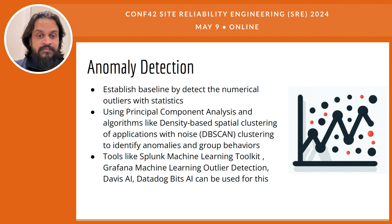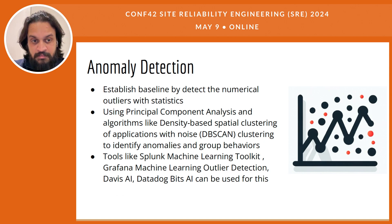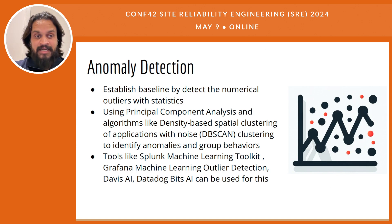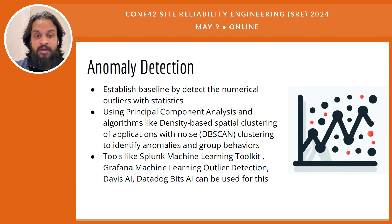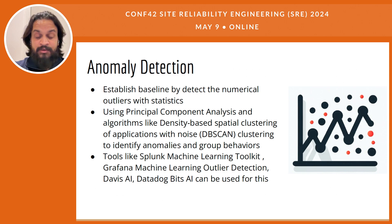There are several tools available that integrate machine learning capabilities specifically designed for anomaly detection: Splunk's Machine Learning Toolkit, Grafana's outlier detection, Davis AI, and Datadog's Bits AI each offer unique features to automate and enhance the detection of anomalies. Splunk provides a robust platform for real-time data analysis, while Grafana focuses on visualizing trends and patterns that deviate from the norm. Davis AI, part of Dynatrace, and Datadog leverage AI to provide predictive insights and automated root cause analysis. These tools significantly reduce the manual effort involved in monitoring and diagnosing systems, allowing SREs to focus on strategic tasks and proactive system management.